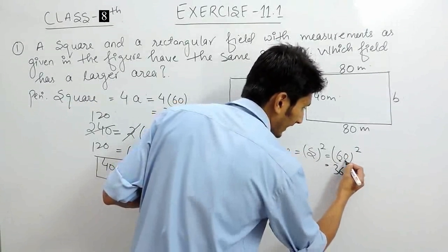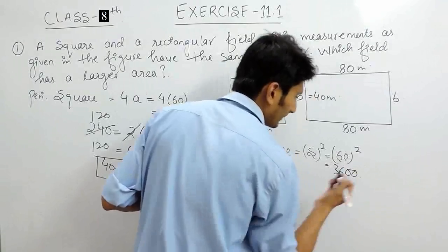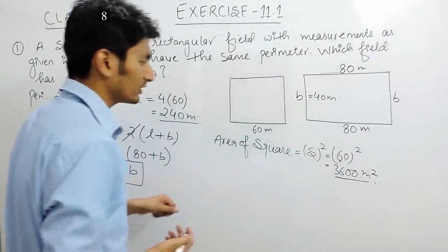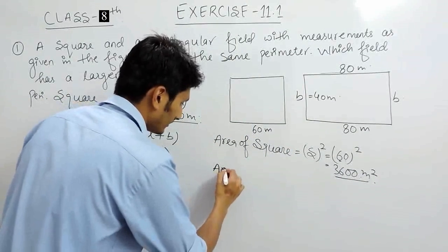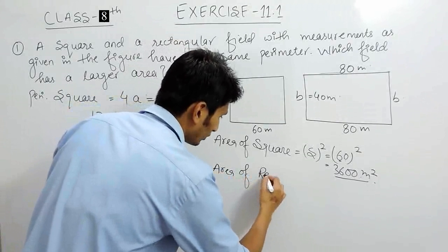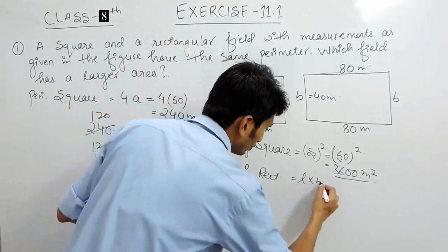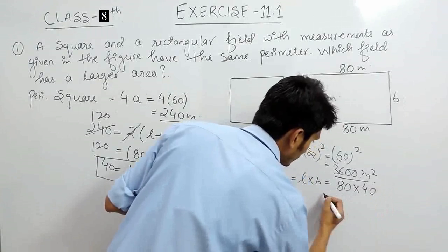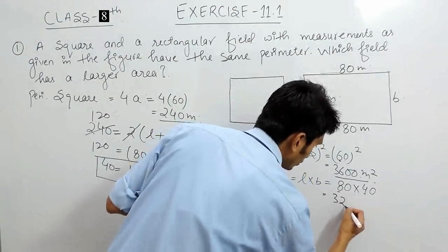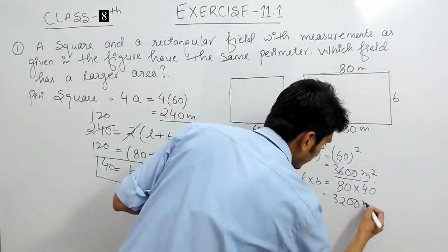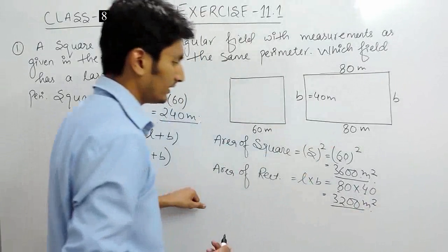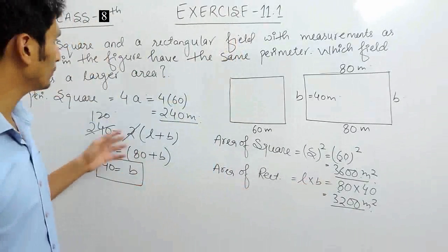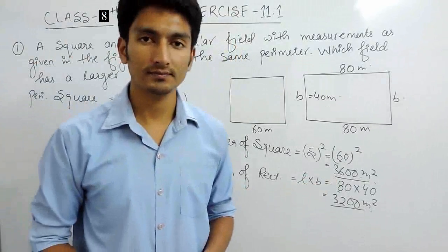6 squared is 36, and the number of zeros are doubled, so the area of the square field is 3600 square meters. Now the area of the rectangular field is length into breadth — 80 into 40 — which is 3200 square meters. Clearly the square field has greater area. This is how you can solve this particular question. Thank you.